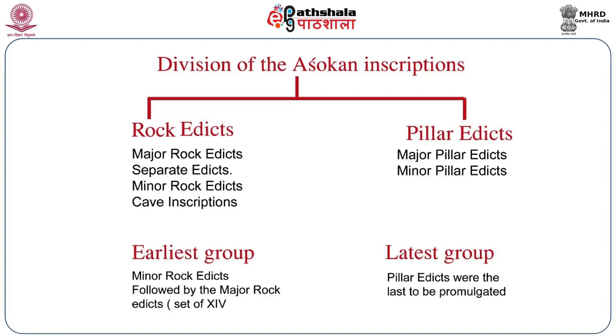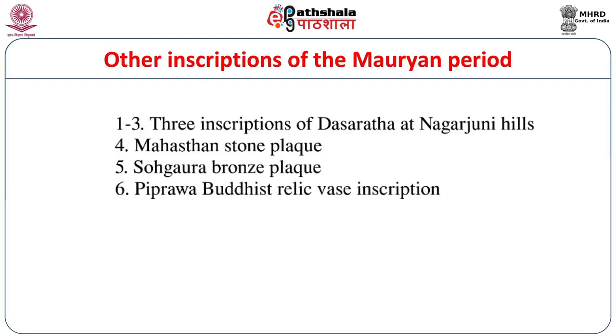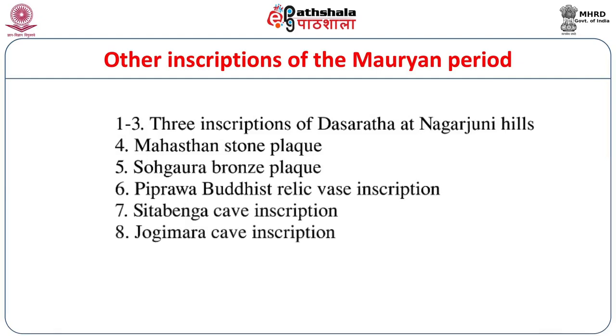From the Ashokan inscriptions, let us move to the other inscriptions of the Mauryan period. There are many more inscriptions designated as Mauryan, though we are not always certain they were promulgated by a Mauryan emperor. At the Barabar cave inscriptions of Ashoka, at the same site in the nearby Nagarjuni hills, Ashoka's grandson Dasharatha also donated caves. There is another inscription at Mahasthan, to be discussed in the miscellaneous category. We also have the Sogoda inscription on a bronze plaque, the Piprava Buddhist relic casket, and the Sitabenga and Jogimara cave inscriptions.